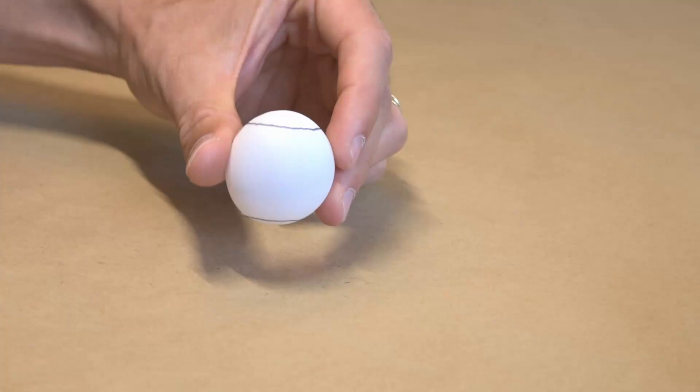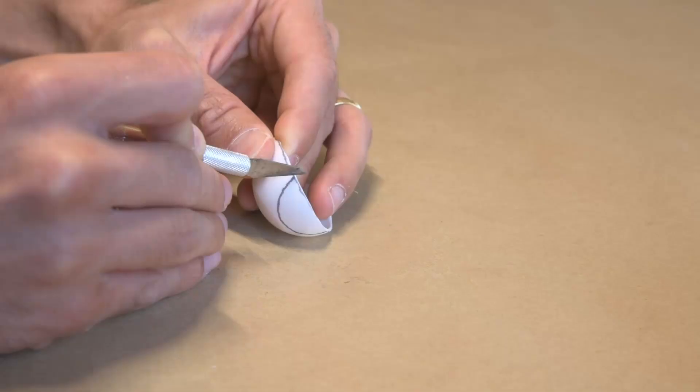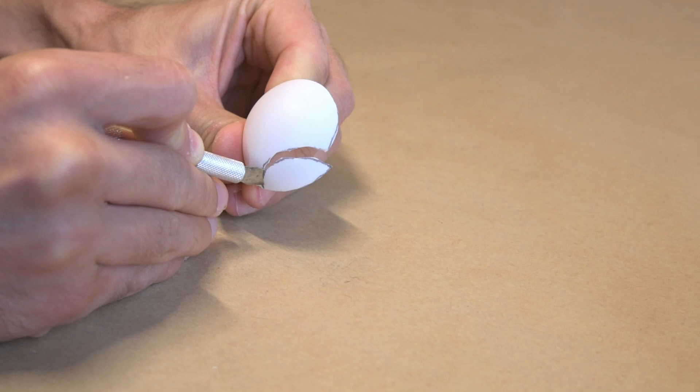I started by cutting a ping pong ball in half with a hobby knife. Then I marked and cut off the north and south poles of the ball. This saves some space and will allow it to rotate around the motor.